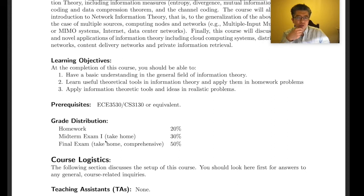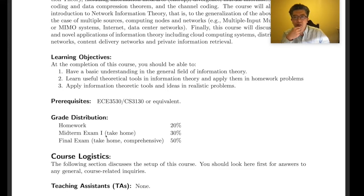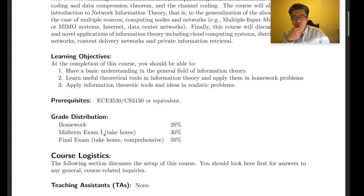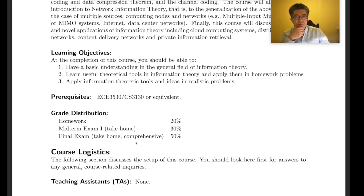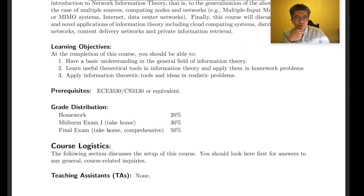The grade distribution has three parts: homework is 20%, the midterm is 30%, and the final exam is 50%. The midterm is take-home and covers the first half of the class. The final is comprehensive and covers the entire class — it's worth more than the midterm, so if you didn't do well on the midterm, you have a chance to recover on the final.